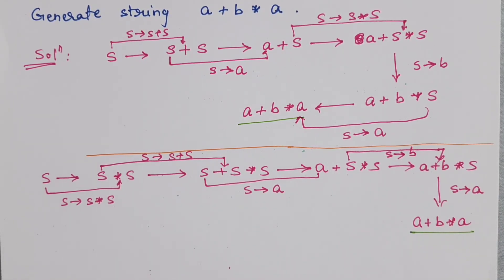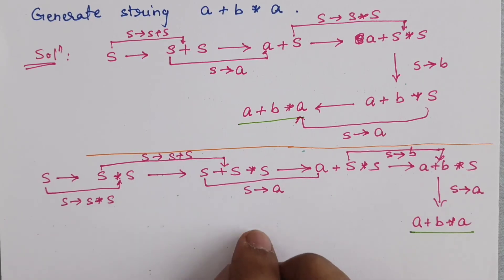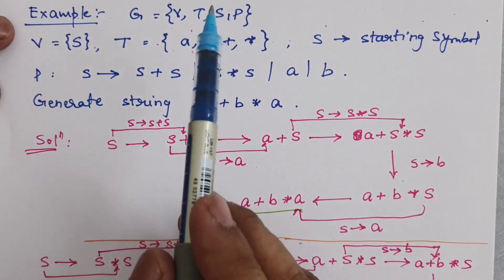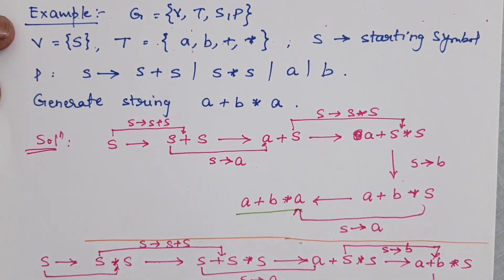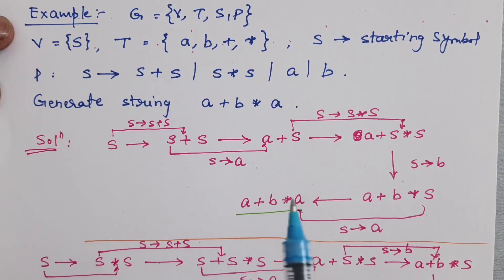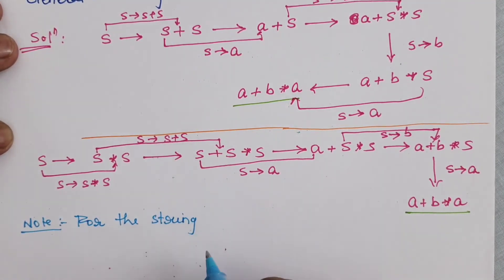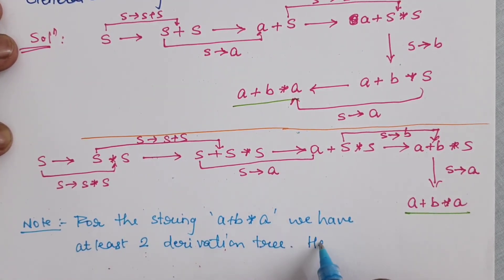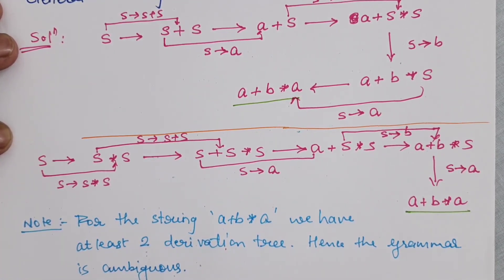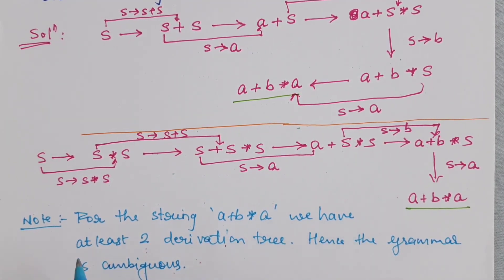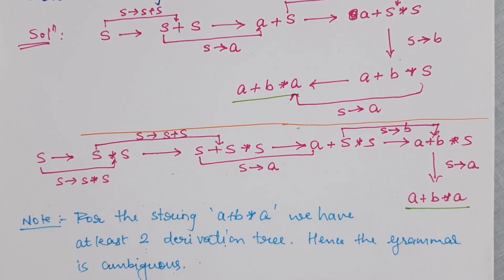My dear friends, for this example we are able to say that this given grammar G with these properties is an ambiguous grammar. For the string a+b*a, we have at least two derivation trees, hence the grammar is ambiguous. Thank you for watching this video — stay tuned for more videos on the Theory of Computation lecture series.